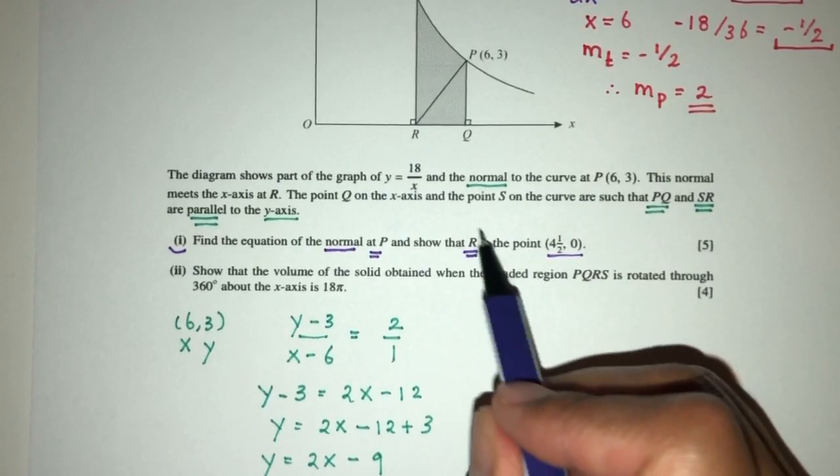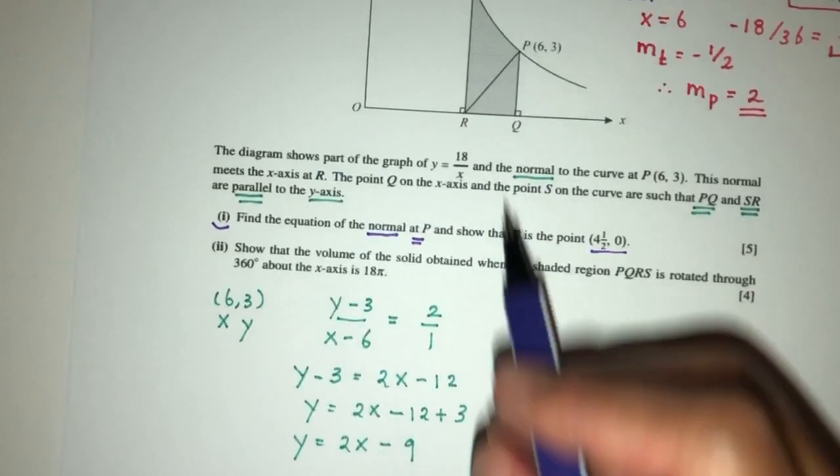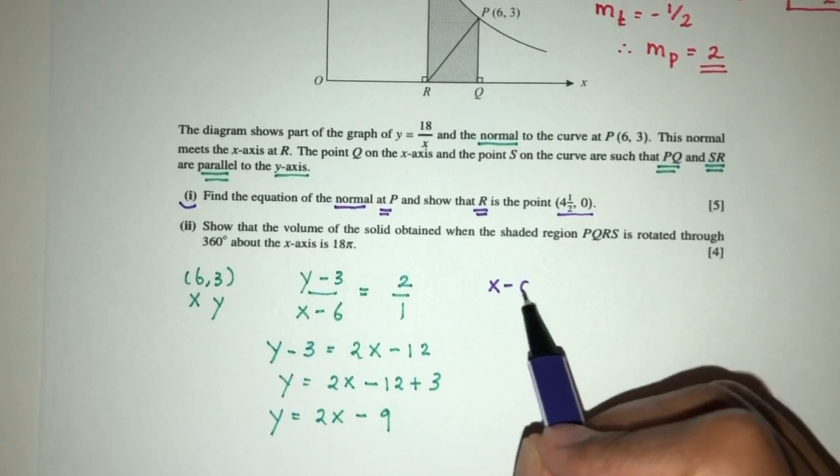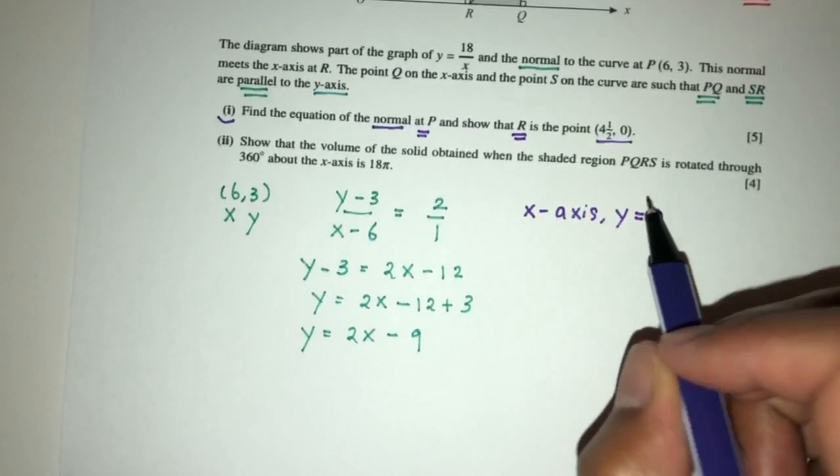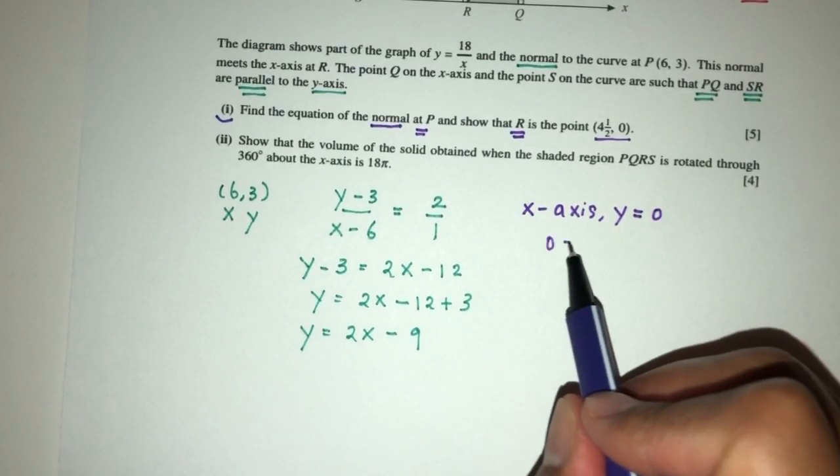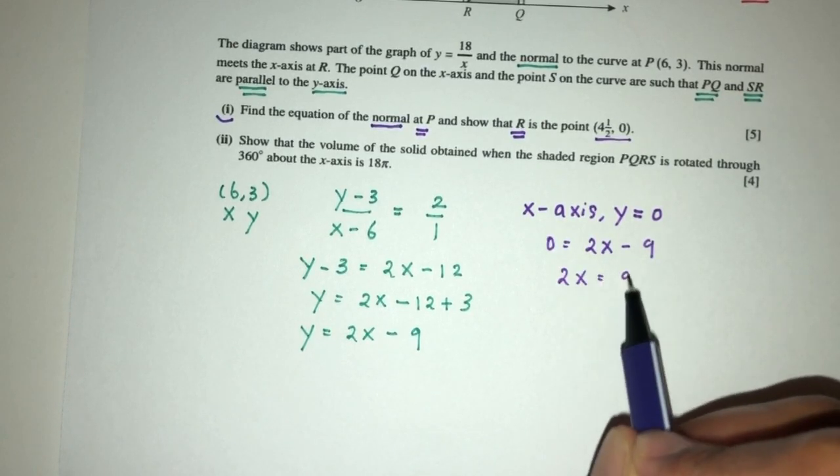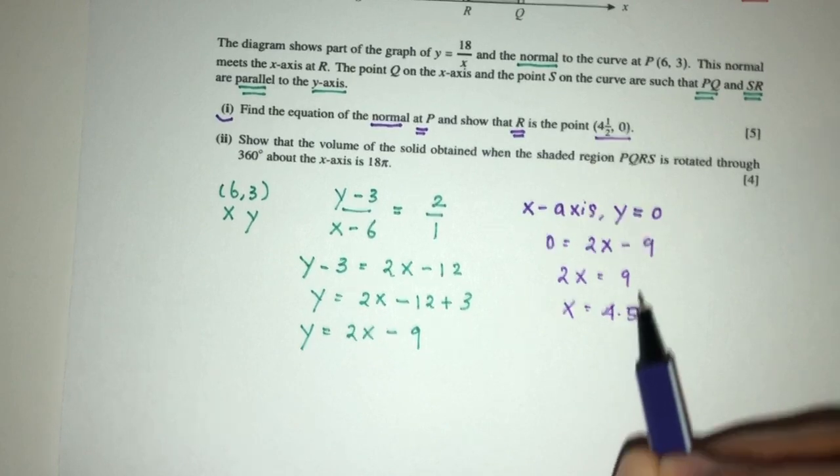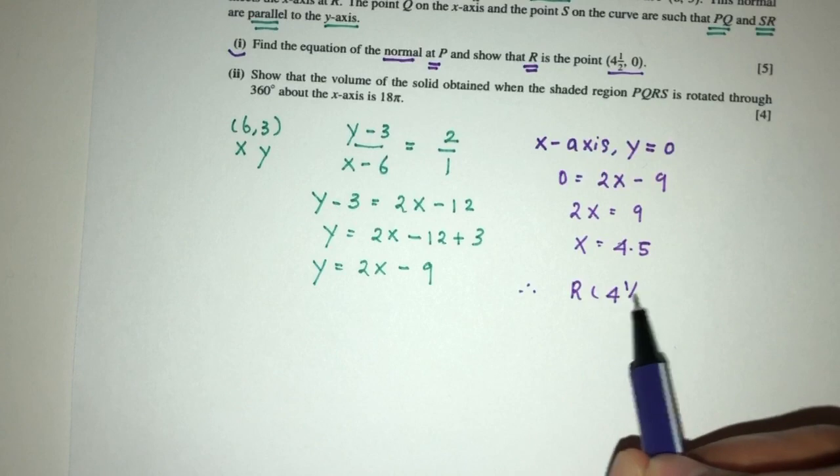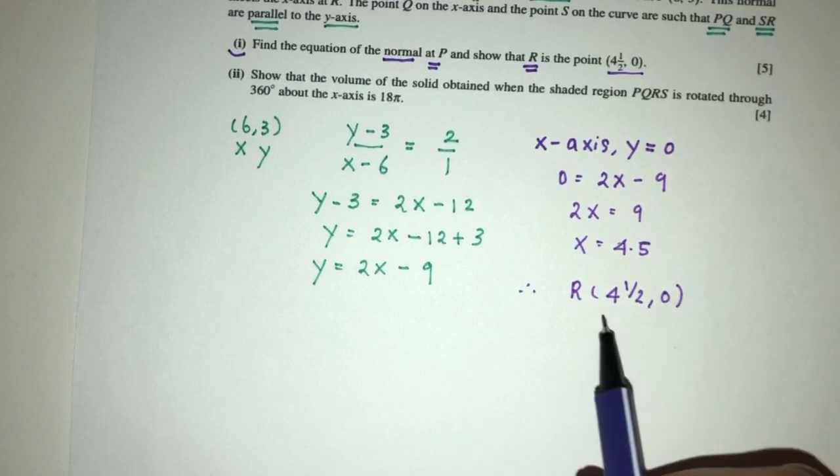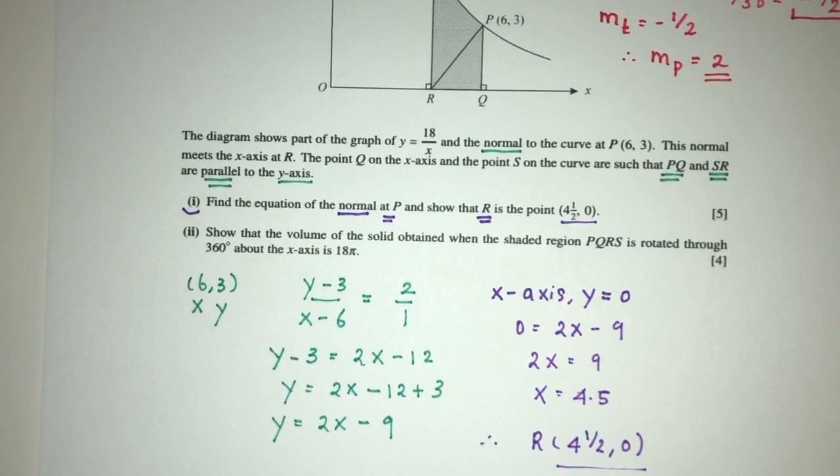Now we have to show the point R is given by this. Point R is on the x-axis, so the value of y has to be 0. We'll place it back in the equation: 0 equals 2x minus 9. So 2x equals 9, x equals 4.5. We have shown that point R is (4.5, 0) as required. That will be part 1 of the question.